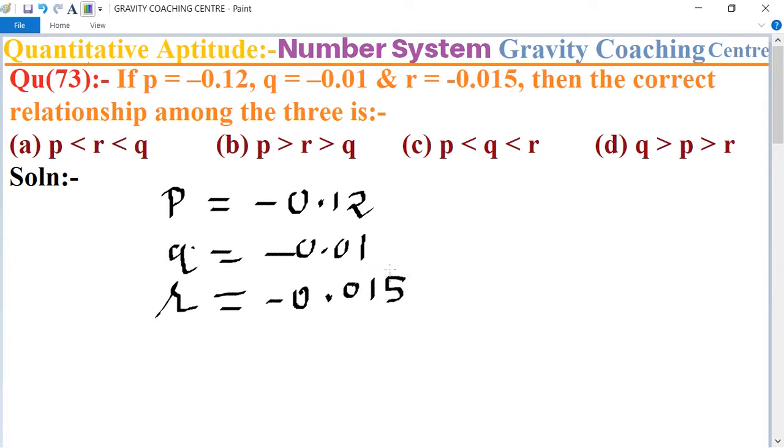We standardize the decimals by adding zeros. In this question, 120 is the biggest absolute value, then 15, and then 10.